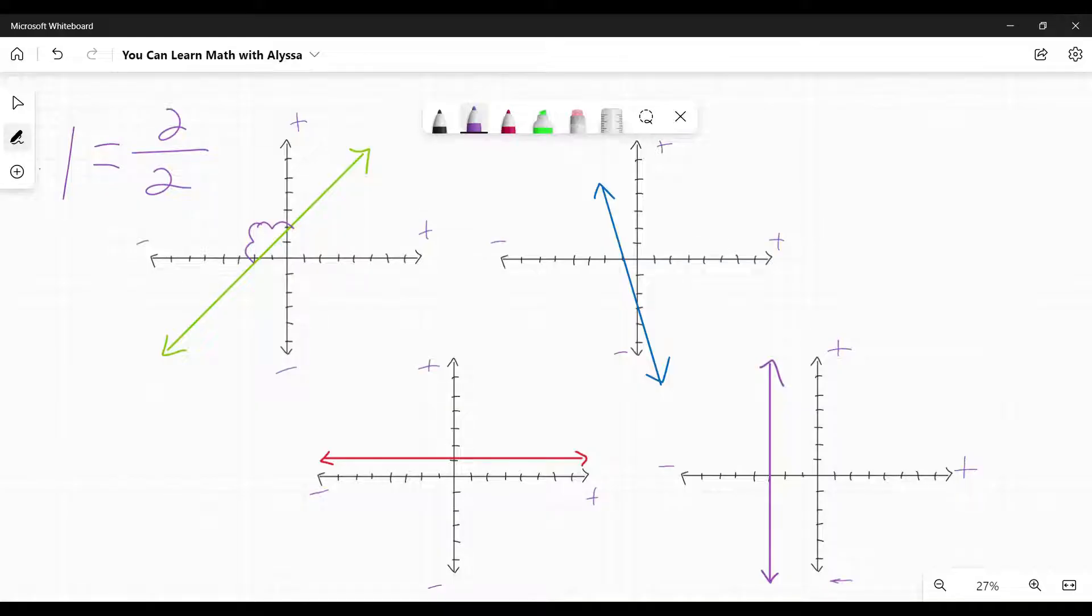Our next one here, if I start at a point and go up one, two, three, that is a positive three, but I go to the left one towards the negative. So three over a negative one gives me a negative slope of negative three.